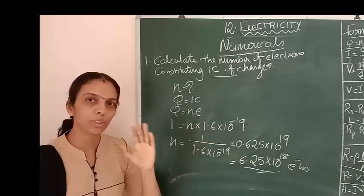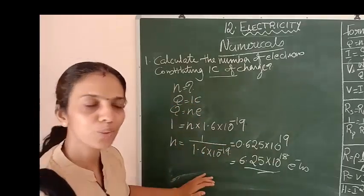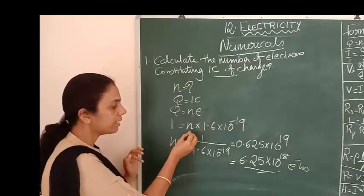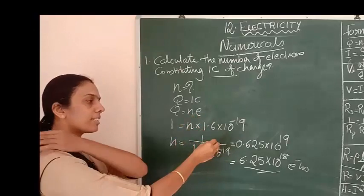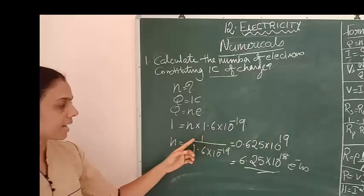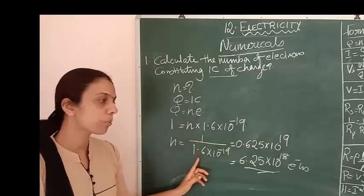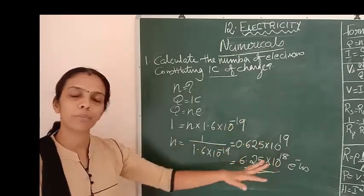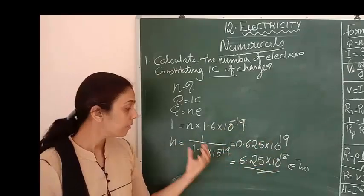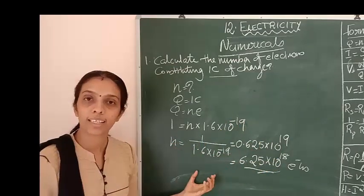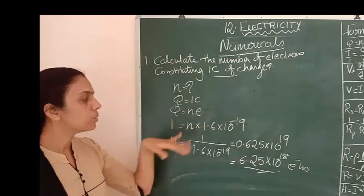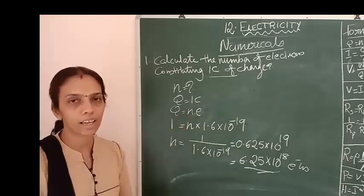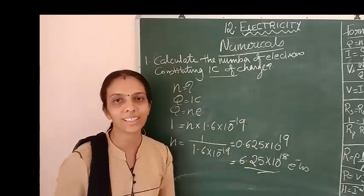Till here, if you are doing this correctly, that means you understood the concepts. The next part is calculation — you should know the mathematics to solve it. Q equals N into E, so N equals 1 divided by 1.6 × 10^-19. You can do the calculation as 10 by 16, then 5 by 8.